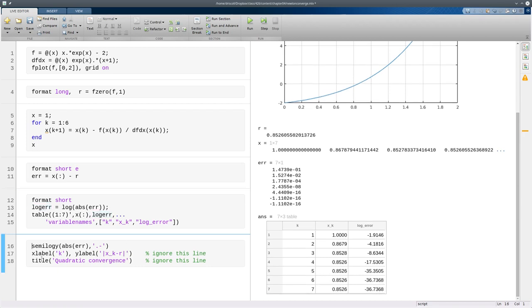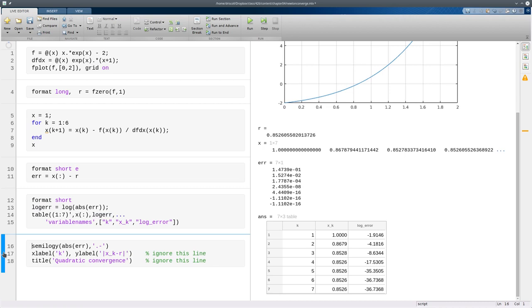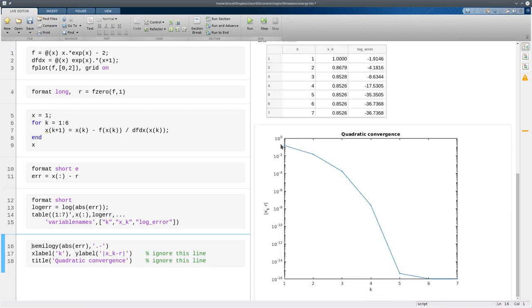It's a little harder to detect quadratic convergence by a graph. So if this is a log linear graph of the error versus iteration number, you can see that it keeps getting steeper from one iteration to the next.